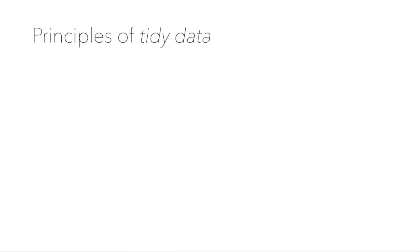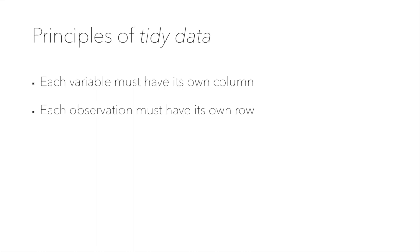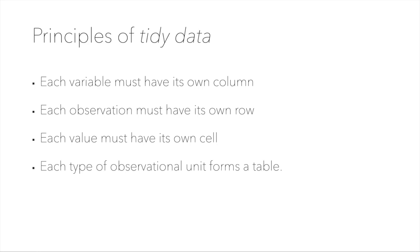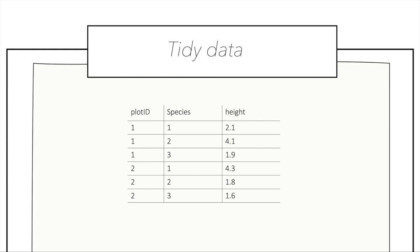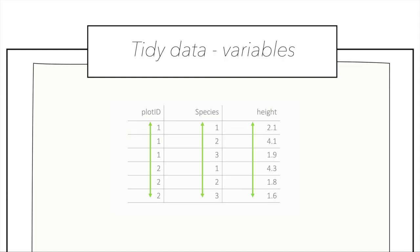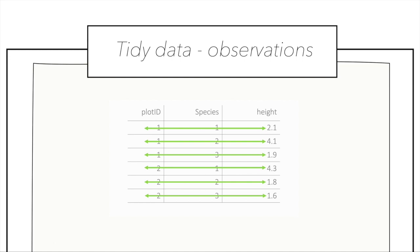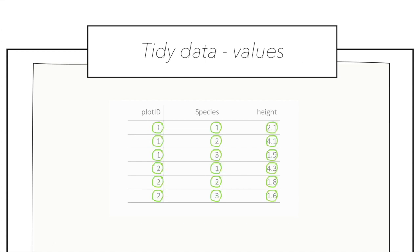So there are the following principles of tidy data: each variable must have its own column, each observation must have its own row, each value must have its own cell, and each observational unit forms a table. With our example, tidy data would look like this, where each variable has its own column, each observation has its own row, and each value has its own cell. We have all species and all plots in the same table, not spread across many tables or data sheets.